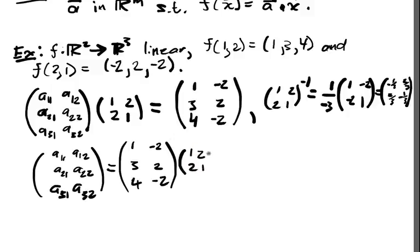times (1,2,2,1) inverse which is equal to, I'm just going to plug this in and compute it. In the long run you get (-5/3, 4/3,